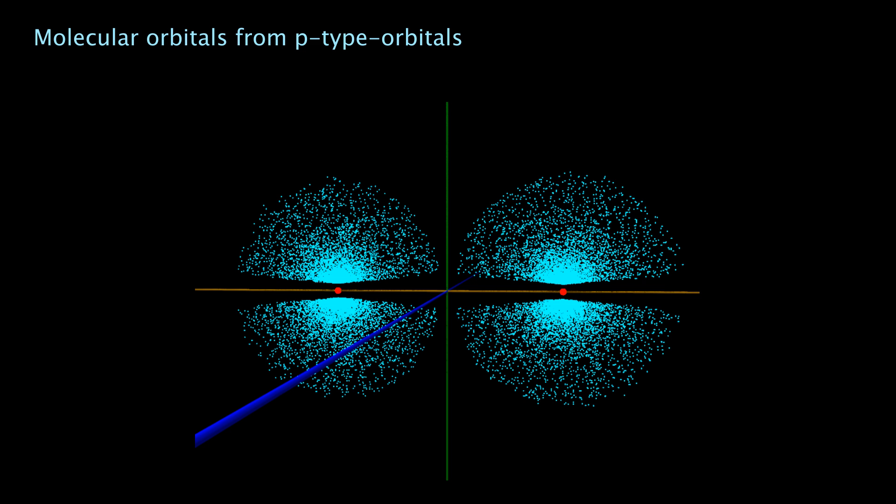Atomic s orbitals represent one type of geometry which can be used to form molecular orbitals. p orbitals represent the other type of geometry which can be used to form molecular orbitals. And in this case the resulting orbital is called a pi orbital and it looks like this.